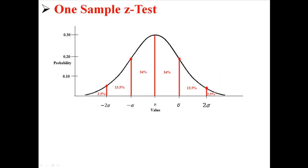Now I'm going to talk about one of the most basic tests of inferential statistics, which is the one-sample z-test. Remember that the empirical rule tells us what proportions or probabilities are associated with different areas of the normal curve. Basically, we know that 68% of scores will fall within one standard deviation, and 95% of scores will fall within two standard deviations, and so on.